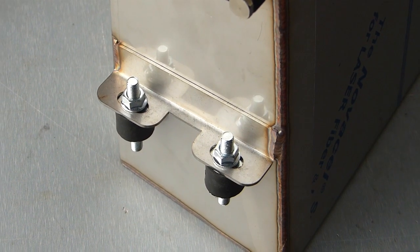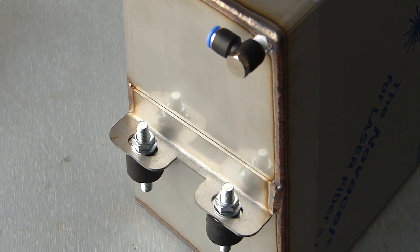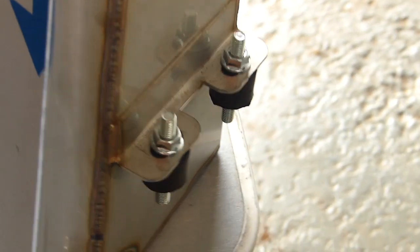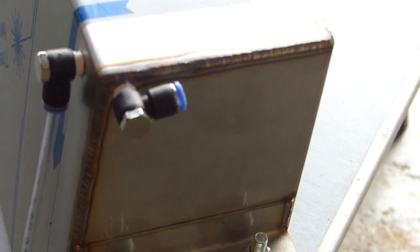This is what your tank should look like ready for install on the car. Rubber mounts installed, breather fitting, level meter installed, and the same rubber mounts and breather fitting on the other side.